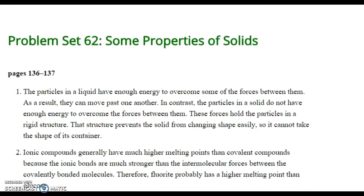And again, we're comparing ionic versus covalent. Ionic compounds generally have a much higher boiling and melting point than covalent compounds because the ionic bonds are much stronger than the intermolecular forces between the covalently bonded molecules. Therefore, fluorite probably has a higher melting point than glucose.